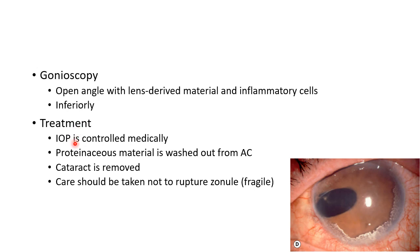Coming to the treatment of phacolytic glaucoma: first we have to control the intraocular pressure medically, then we have to take the patient up for surgery. During surgery, the proteinaceous material is washed out from the anterior chamber and then the cataract is removed. Care should be taken not to rupture the zonules, because the zonules in phacolytic glaucoma are fragile.